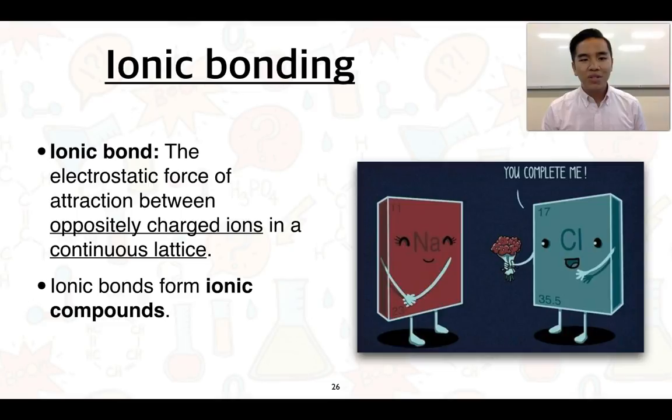An ionic bond is a force of attraction that exists between oppositely charged ions. You've got positively charged ions called cations, negatively charged ions called anions. They have a strong force of attraction to one another and are held together within a lattice structure, and we say that ionic bonds form ionic compounds.